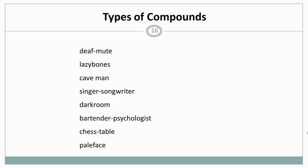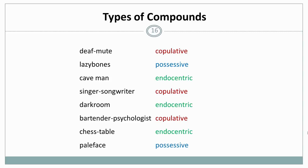Here are a few more examples of compounds. Deaf-mute is a copulative compound because someone who's deaf-mute is equally deaf as he's mute. Lazybones is a possessive compound because it describes a person and it's not a type of bone. Caveman is an endocentric compound because a caveman is a type of man. A singer-songwriter is copulative because a singer-songwriter is equally a singer as he is a songwriter. A darkroom is, again, endocentric as it's a type of room. Bartender-psychologist is copulative. Chess table is endocentric. It's a type of table. And a paleface is, again, possessive. It describes a person.